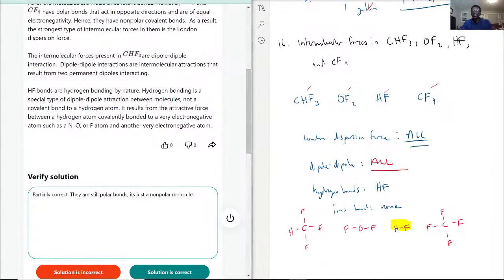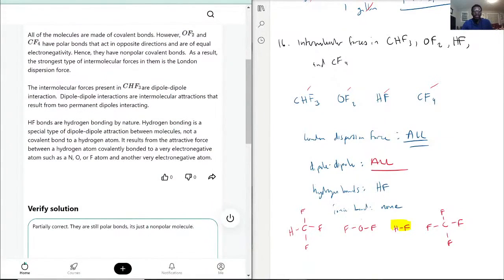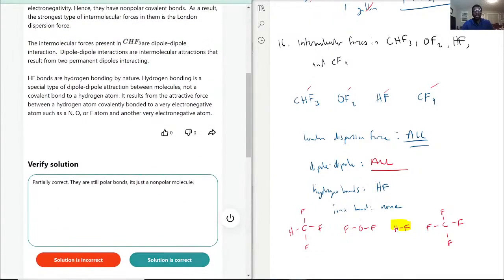The polar bonds, yes, the polarities would still interact with each other. In fact, a more fitting example is OF2. Because it has lone pairs on the oxygen, that one is definitely going to be polar. OF2 is going to be a bent shape, just like H2O. Keep that in mind, they will still interact. The dipole-dipole forces are still there.